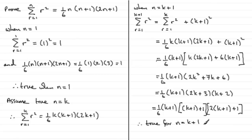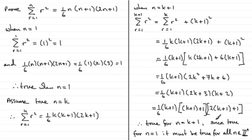To finalise: we know that if it's true for n equals k, it has been proved to be true for n equals k plus 1. We proved it was true for n equals 1, so it must be true for n equals 2, n equals 3, and so on, for all positive integers. Therefore, since it is true for n equals 1, it must be true for all positive integers n.